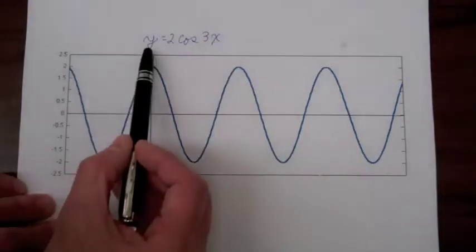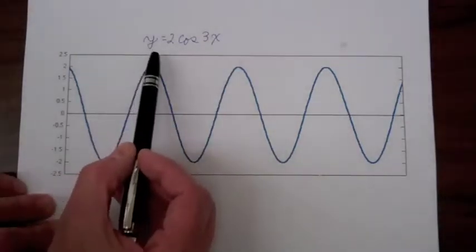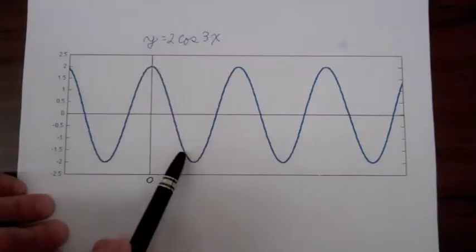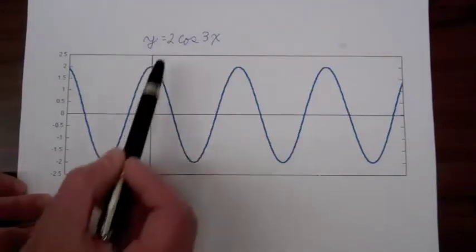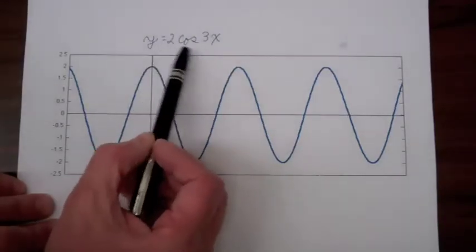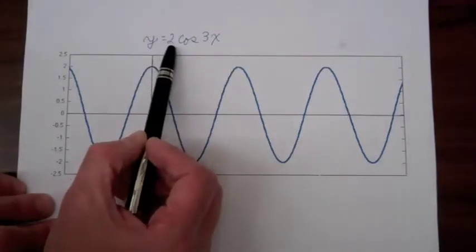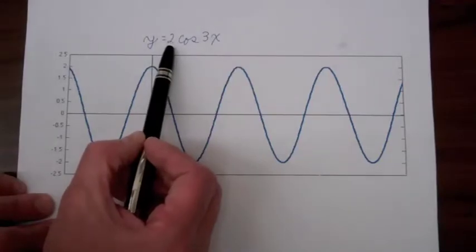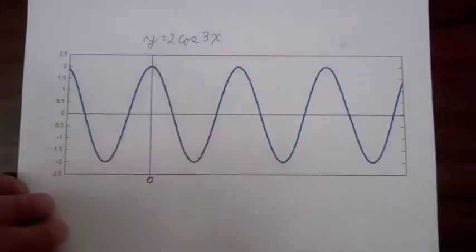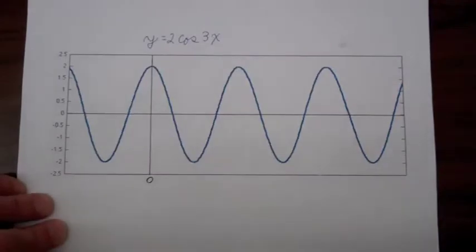The function y is going to vary between plus 2 and minus 2 because we're multiplying the cosine function by 2, and this 2 is referred to as the amplitude of our cosine function.